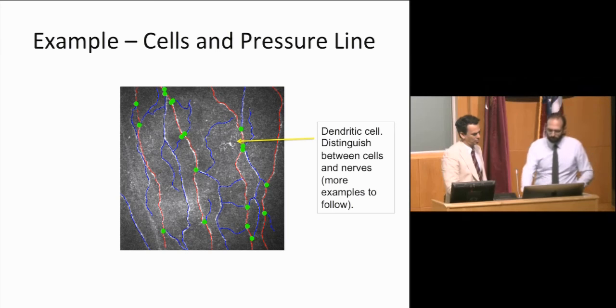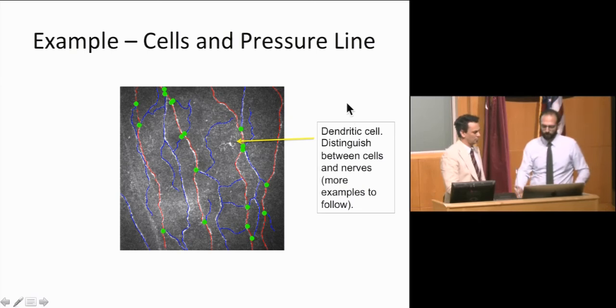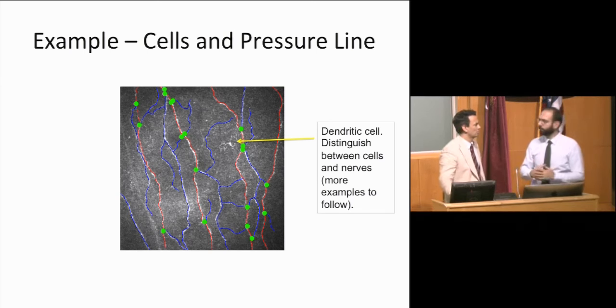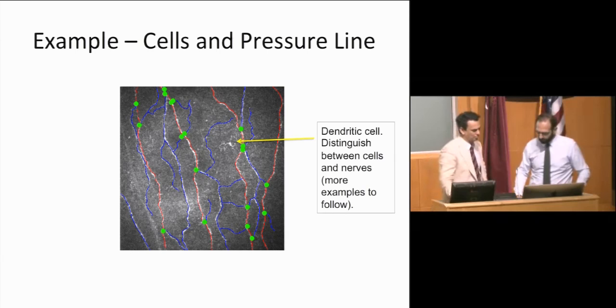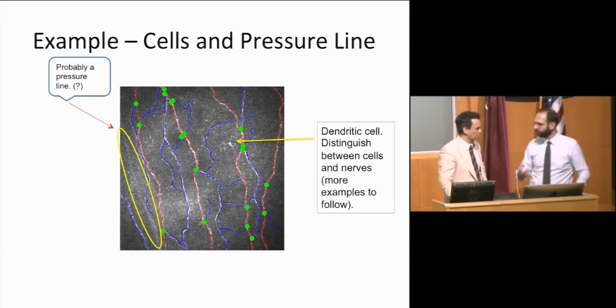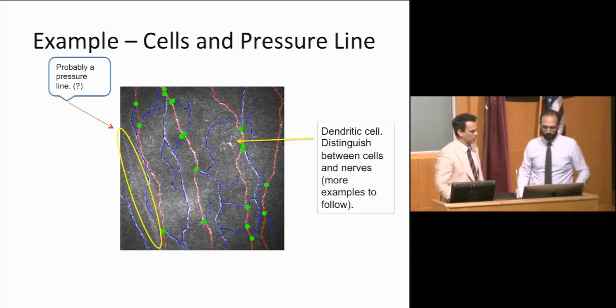So as I said, this is a cell and probably a dendrite. So you have to distinguish between these cells and the nerves. Otherwise, and as we're going to see in the following examples, it can lead to a significant overestimation of the number of nerve fibers or branches in the image. And always keep in mind that you might see pressure lines and you shouldn't be tracing these as nerve fibers. They haven't got any importance for the results.